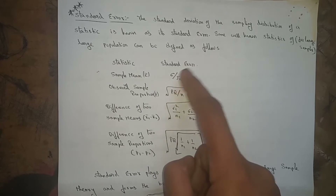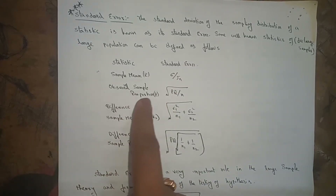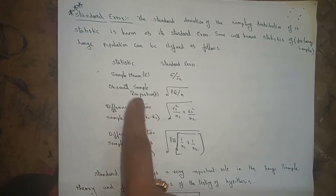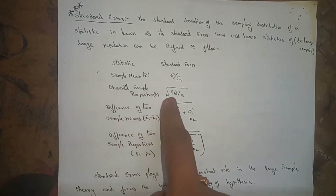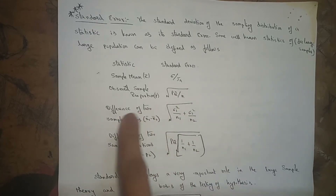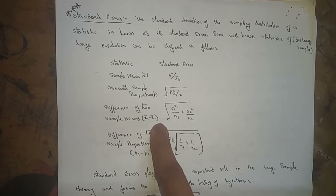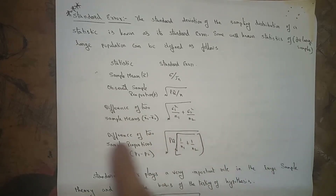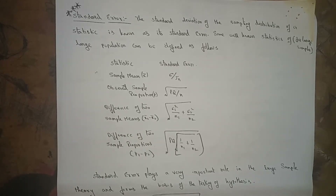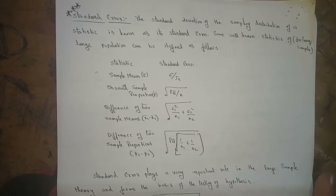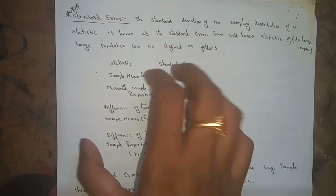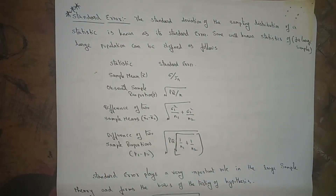The standard error of the sample mean is sigma by root n. For the observed sample proportion p, the standard error is under root of pq by n. For the difference of two sample means, x̄₁ minus x̄₂, the standard error is under root of (σ₁² / n₁) + (σ₂² / n₂). The next one is the difference of two sample proportions, p₁ minus p₂, with standard error equal to under root of pq times (1/n₁ + 1/n₂).